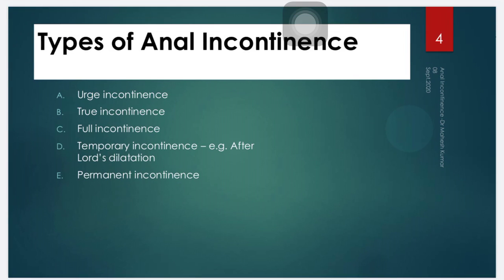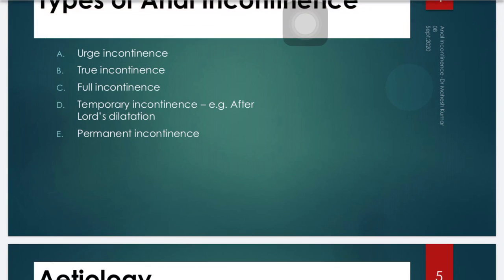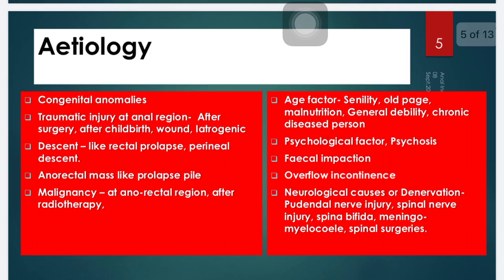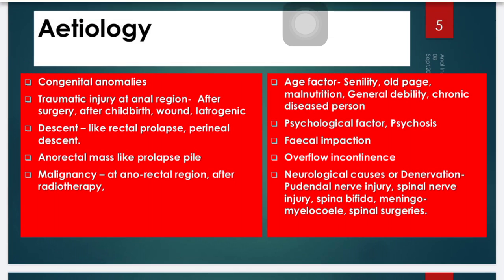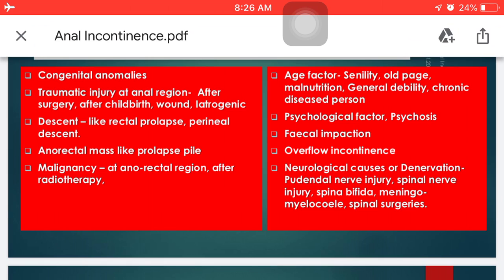What are the etiologies? The etiology may be congenital anomalies, encopresis, traumatic injury at the anal region after surgery, after childbirth, wound formation at the anal region, or iatrogenic after surgical intervention. The etiology may also include anorectal disease, descent such as rectal prolapse or perineal descent — in which seepage from the anal region is also seen — anorectal mass such as prolapsed pile mass, malignancy or carcinoma at the anorectal region, and incontinence conditions seen after radiotherapy.